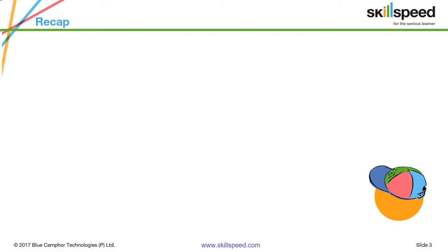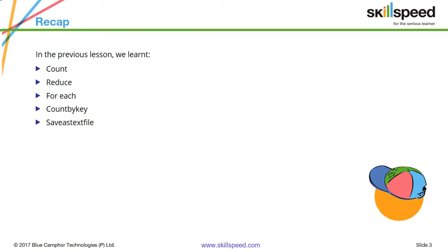Before we proceed, let's quickly recap the last lesson. In the last lesson we had a look at count, reduce, forEach, countByKey, and saveAsTextFile, which are basically the actions we can perform on an RDD. Remember, actions will typically show you an output or save the output, rather than creating a new RDD, which is typically done using transformations.